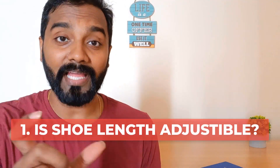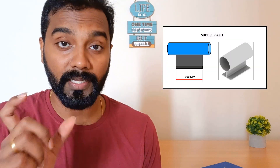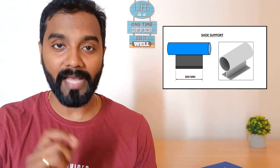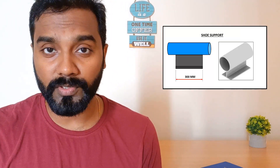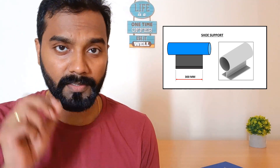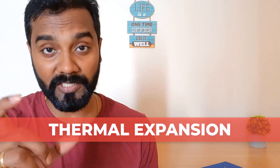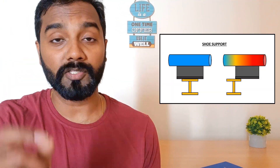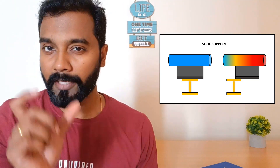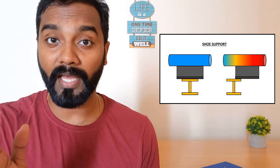Point number one: can we change the length of the shoe support given in the pipe support standard? If you look at any standard across the world, the length of shoe supports given in the standard would be 300 mm. The length of shoe supports is designed based on various factors. One very important factor is the thermodynamic expansion of the piping. If the pipe tends to move from one point to another during thermal expansion, the pipe support has to ensure that the pipe still remains over the structure or beam. If the length of the shoe support is less, it will slip away from the beam and cause a lot of sagging.